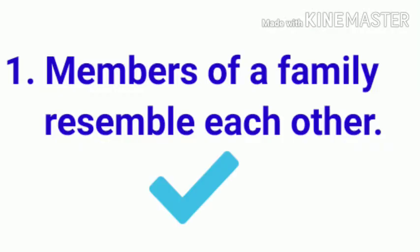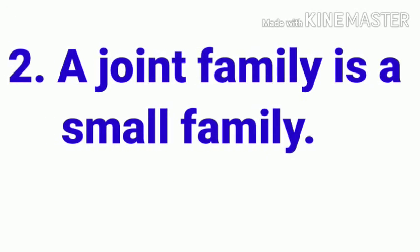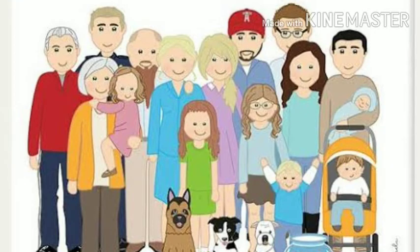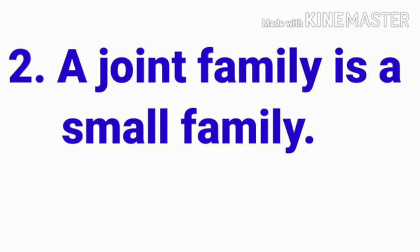Let's move to the second sentence: a joint family is a small family. We have already learnt that a joint family is a large family in which grandparents, parents, children, uncles, aunts and cousins live together. So this statement is the wrong one — we will mark it wrong.